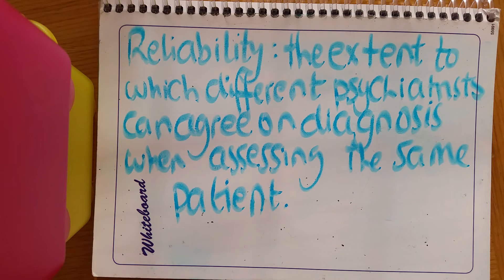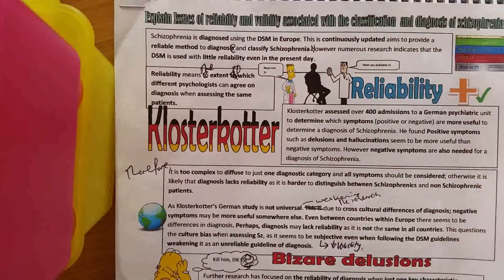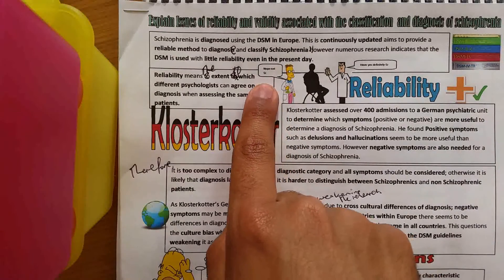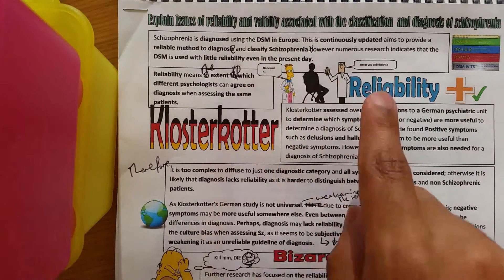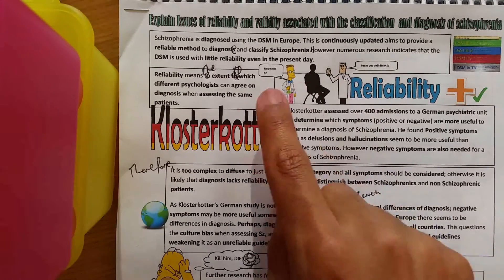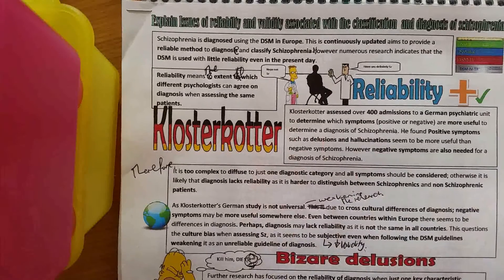Reliability is defined as the extent to which different psychiatrists can agree on a diagnosis when assessing the same patients. A picture illustrates two psychiatrists with differing opinions — one saying 'not schizophrenic' and the other saying 'definitely schizophrenic' — showing that reliability between psychiatrists can be low.